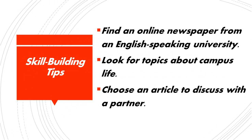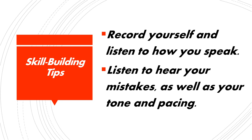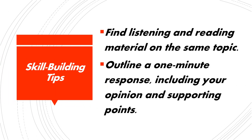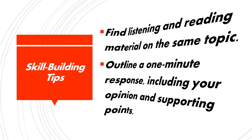Here are some activities that can help you build your skills for integrated speaking tasks, especially numbers 3 and 5 about campus situations. Find an online newspaper from an English-speaking university and look for topics about campus life. Choose an article to discuss with a partner. Record yourself and listen to how you speak — listen to hear your mistakes as well as your tone and pacing. Find listening and reading material on the same topic, and outline a one-minute response including your opinion and supporting points.